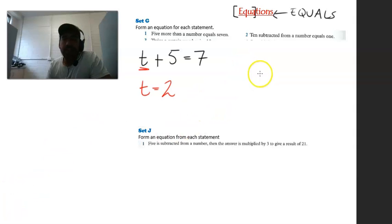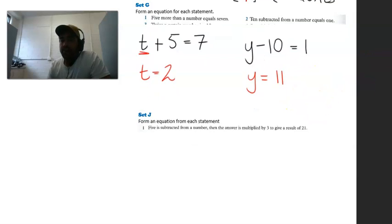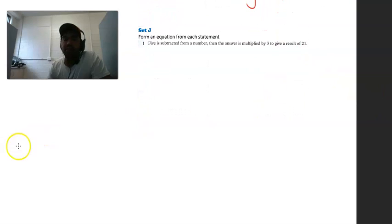Next one, 10 subtracted from a number equals one. So 10 is subtracted from a number. Let's do the letter y. And 10 is subtracted from that. So y minus 10 and this is equal to one. So again, logically speaking, we know that this letter has to equal 11. Now we know that there are algebraic tools that we can use to solve this. You can take the plus 5 to the other side or you can balance the equation by minusing 5 on both sides to get t equals 2 and adding 11 on both sides to get y equals 11. If you can use your algebraic skills to solve this you can. I've just used logic for the first set of questions because they're quite simple. But we'll see if we need to do it for the second question.